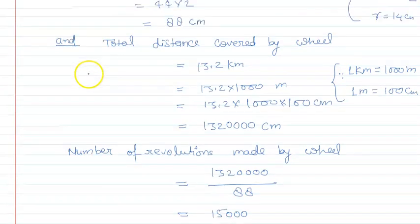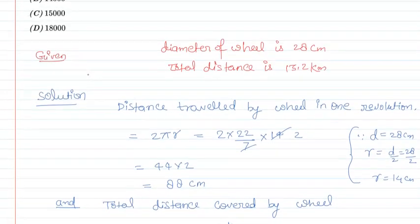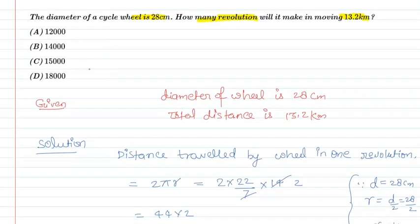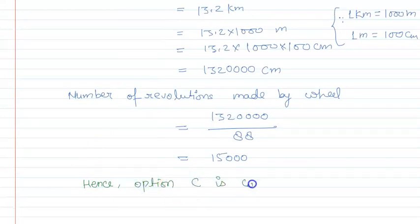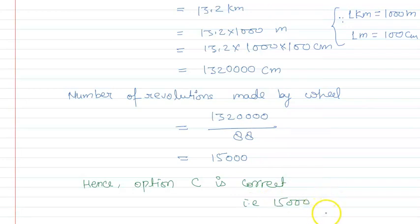Check करते हैं — correct option C है। Hence, option C is correct, that is 15,000. So I hope you have understood the question. Thank you.